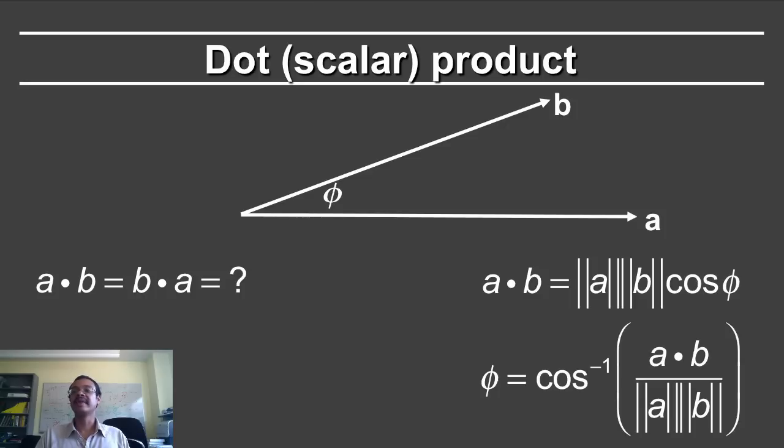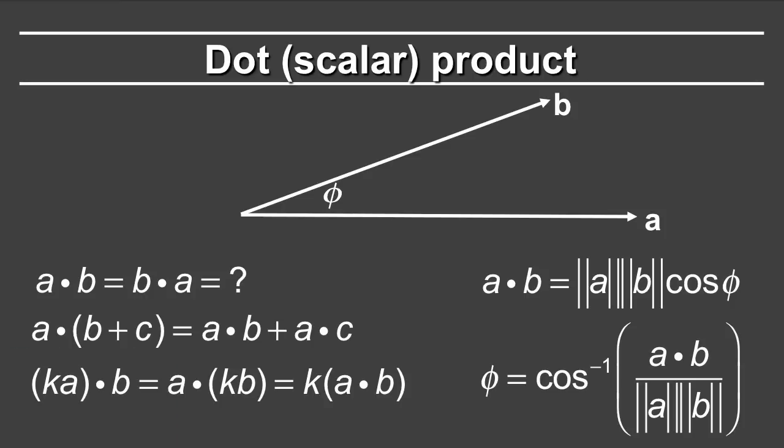A dot b is the norm of a times the norm of b times the cosine of the angle between them. From that equation, you can calculate the angle between two vectors as the inverse cosine of a dot b divided by each of their individual magnitudes. This is in fact one of the most common uses of the dot product, because the dot product can be calculated very efficiently in Cartesian components, but the angle between two vectors is not that easily. So what you do is, you take the dot product, and then by taking the inverse cosine, you get the angle between the two vectors. The dot or scalar product has the associativity and the multiplication properties. So a dot (b + c) is equal to a dot b plus a dot c. And if you multiply a scalar through any of the vectors, ka dot b or a dot kb, that just multiplies the dot product by a scalar.